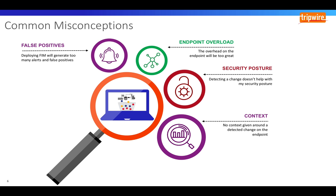So how about the lack of context in changes? Some customers have seen other technologies that do basic levels of file integrity monitoring, and they inform me that it gives them no context about the change — it simply detects a change on the endpoint giving the date, the time, and the name of the file that has changed. For some that's all they want, but they then have to investigate further to ascertain what was changed and who made the change. With Tripwire Enterprise we add information to the change. The software tells you the timings, what file was changed, and also provides who made the change, and where applicable also tells you what changed in that file, registry, or configuration setting.